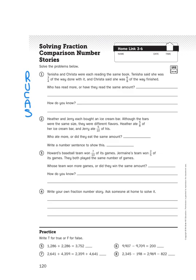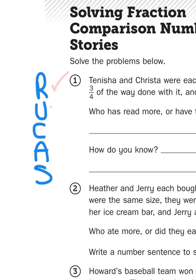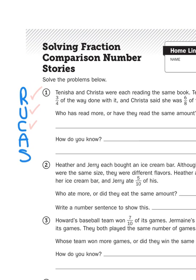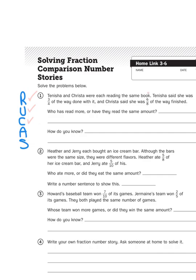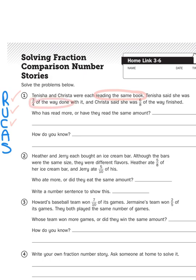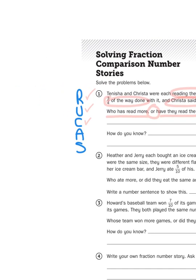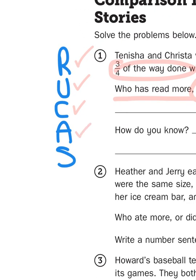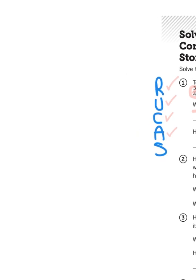As I reread, I'm going to underline the question and circle important information. Tanisha and Krista were reading the same book. Tanisha said she was three-fourths of the way done, and Krista said she was six-eighths of the way finished. Who has read more, or have they read the same amount? Now what we need to do is come up with an action plan — comparing two fractions: three-fourths and six-eighths.